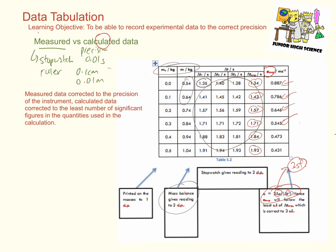So in summary, we record our measured data corrected to the precision of the instrument, and we record our calculated data corrected to the least number of significant figures in the quantities.